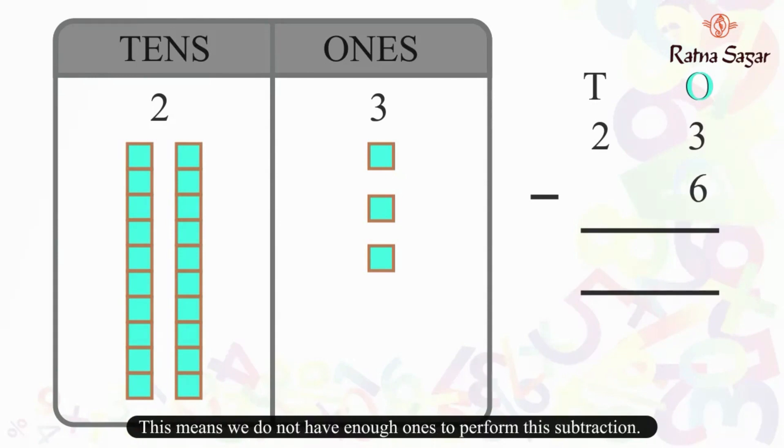This means we do not have enough ones to perform this subtraction. So, we need to borrow a 10 from the digit at the tens place. In other words, we say that we do regrouping. Let us now try to understand how we can do this.